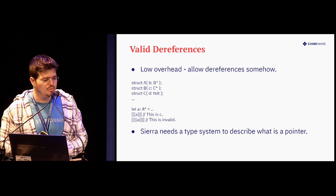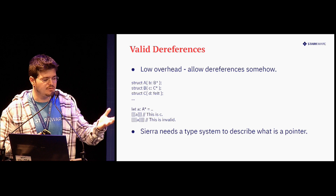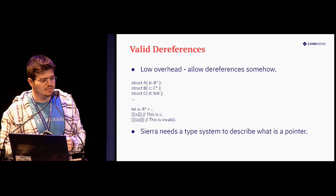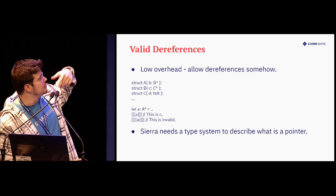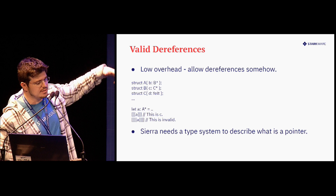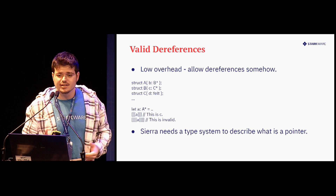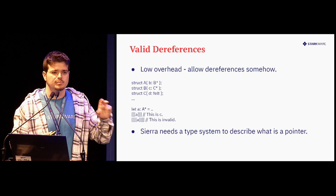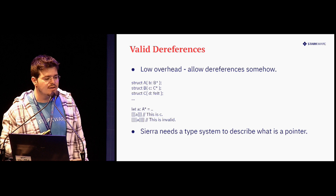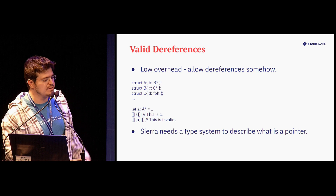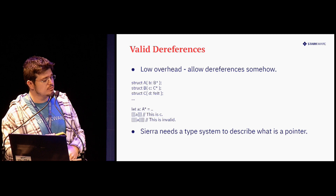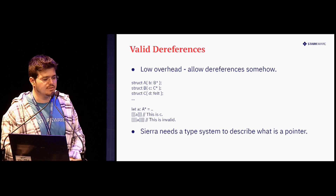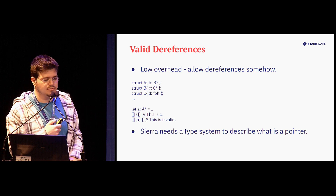We have this struct A that has a pointer to B, B has a pointer to C, and C has some felt. When we start with A, we can dereference three times to get C, but we can't dereference four times — that's invalid. So Sierra needs some more information regarding instances and places in memory. It specifically needs a type system so we can describe A as a pointer to a pointer to a pointer to felt — to allow only three dereferences, not four.